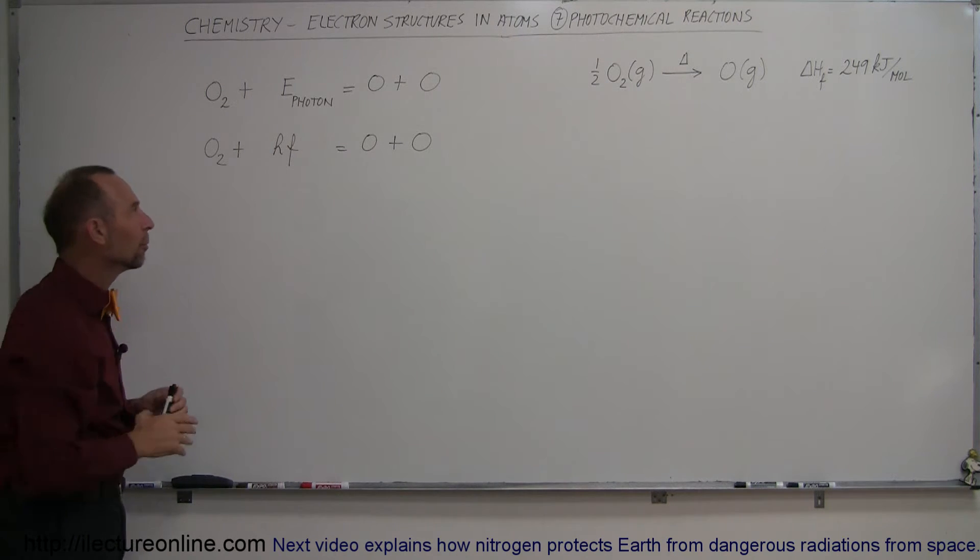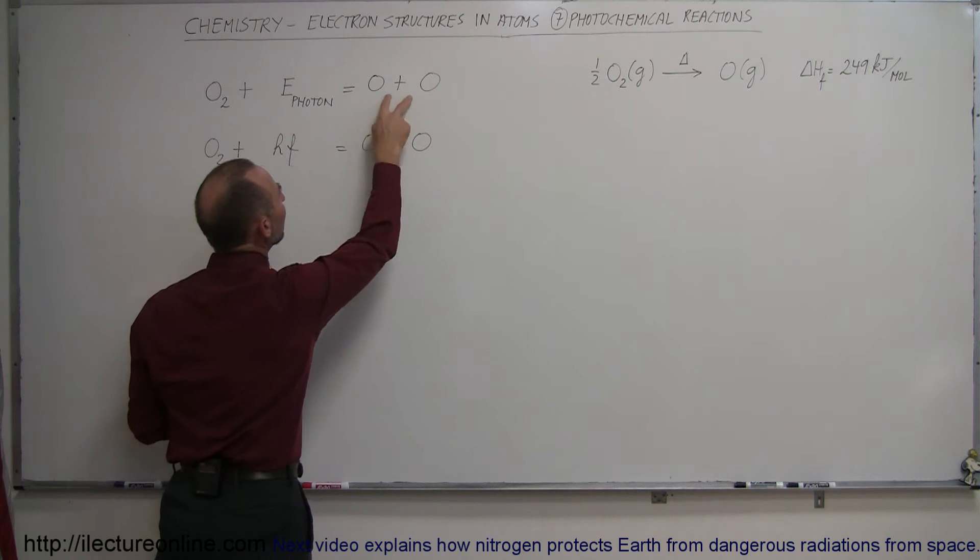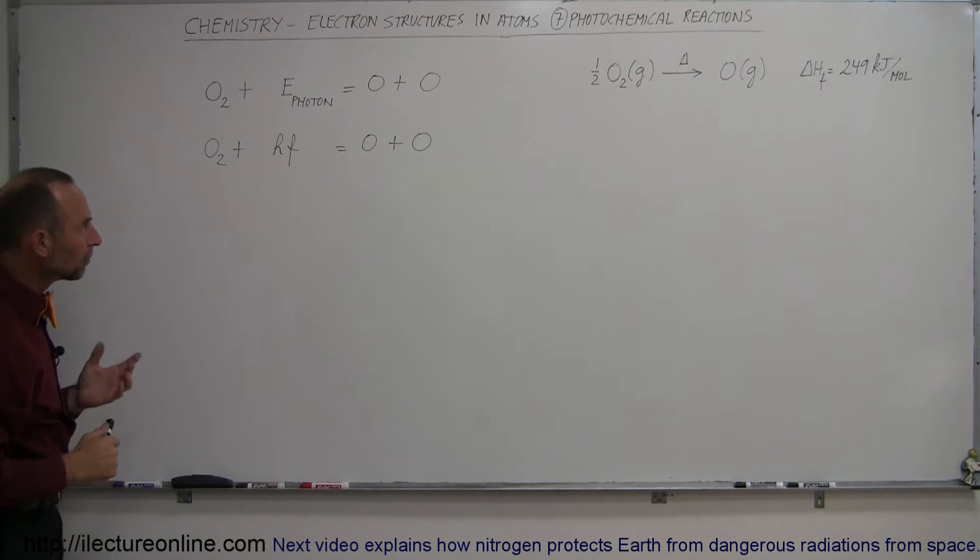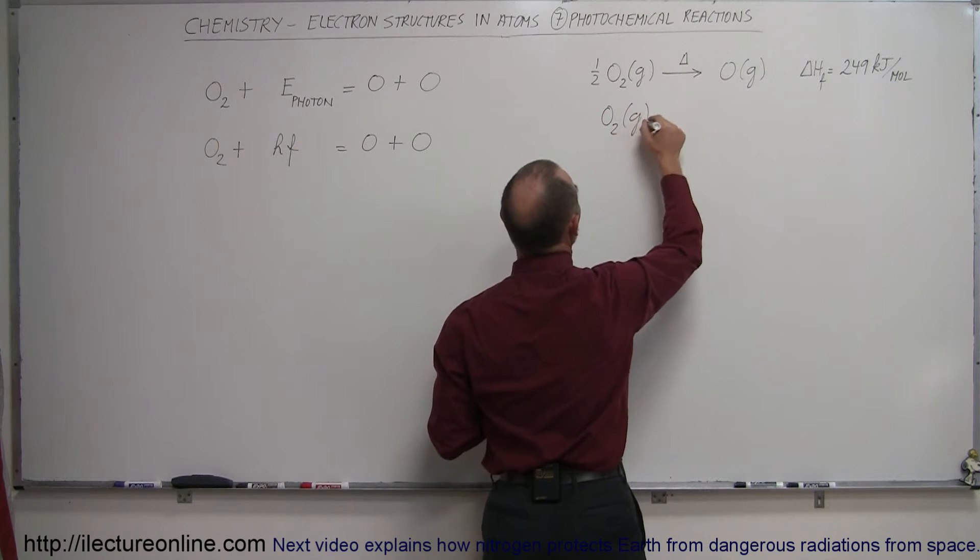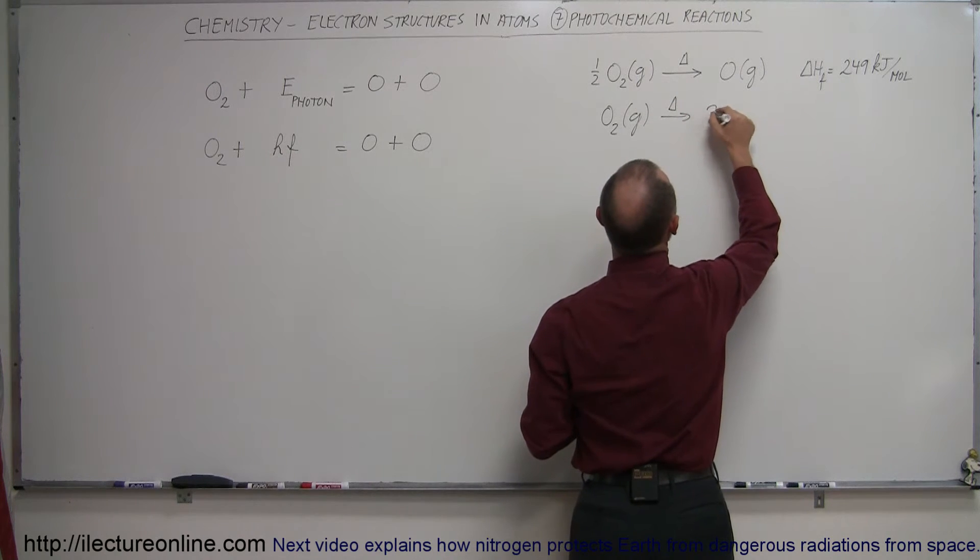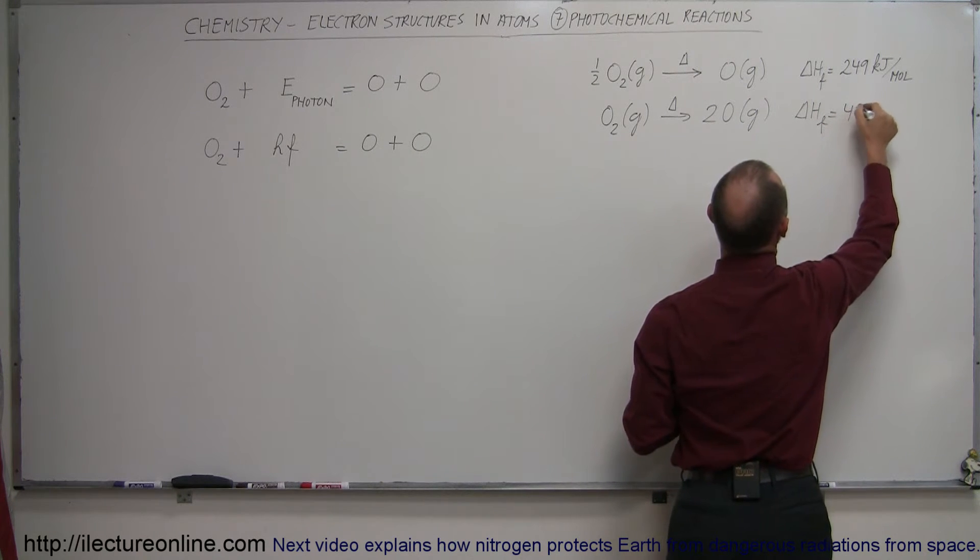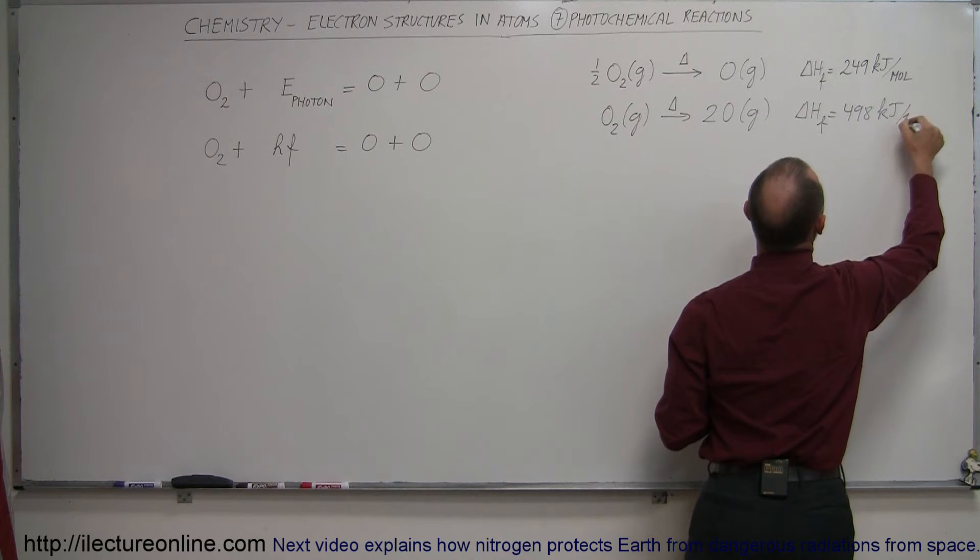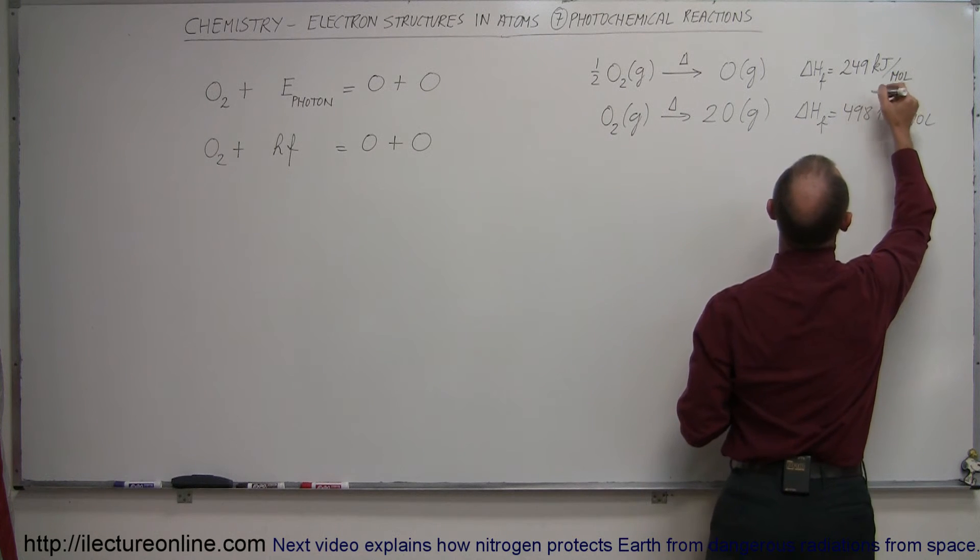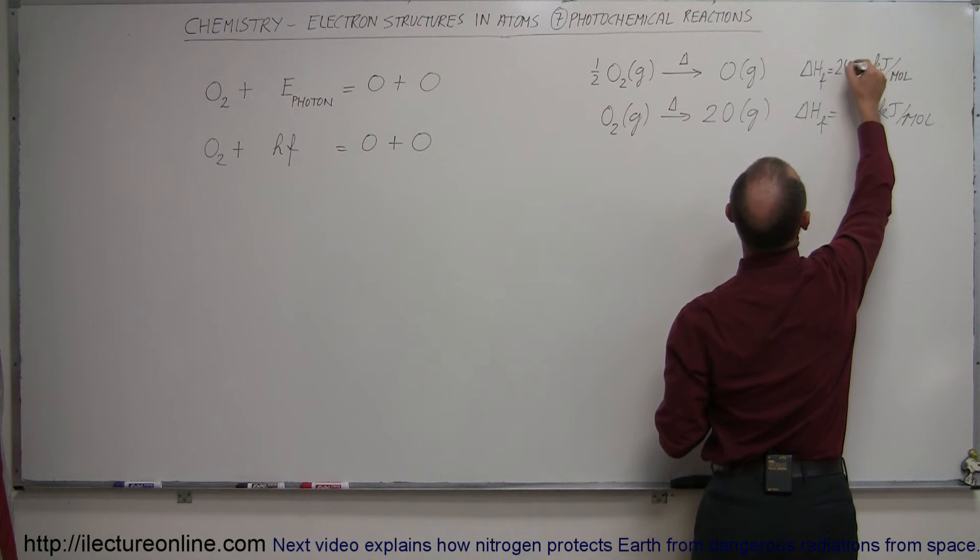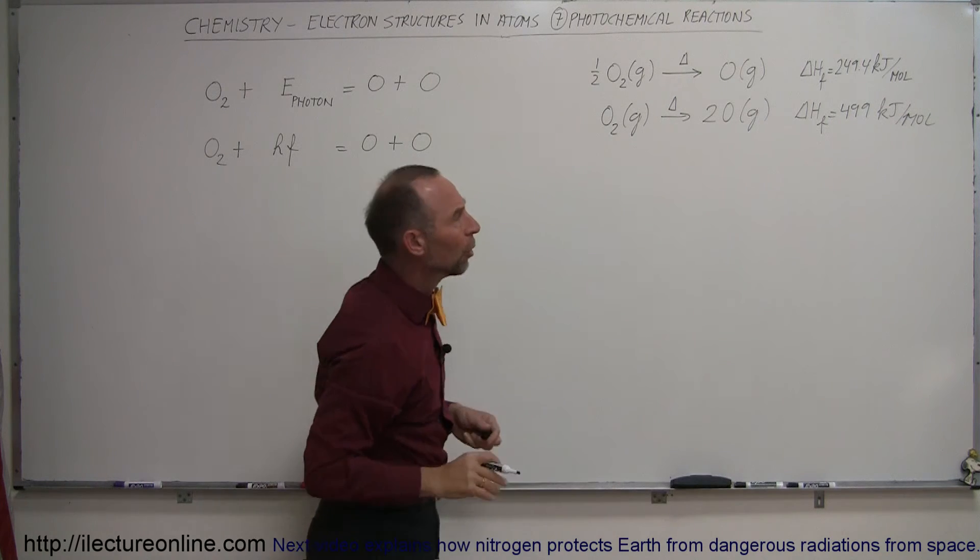But now let's take a look at this in the form of a single reaction. If you take a single molecule like this, how much energy do you need to turn into two individual oxygen atoms? The delta H of formation would be 498 kilojoules per mole. Actually, I think it's a little bit more than 249 kilojoules, I think it's 249.4. So to be absolutely correct, it would be 249.4 kilojoules, that makes this about 499 kilojoules per mole rounded up.